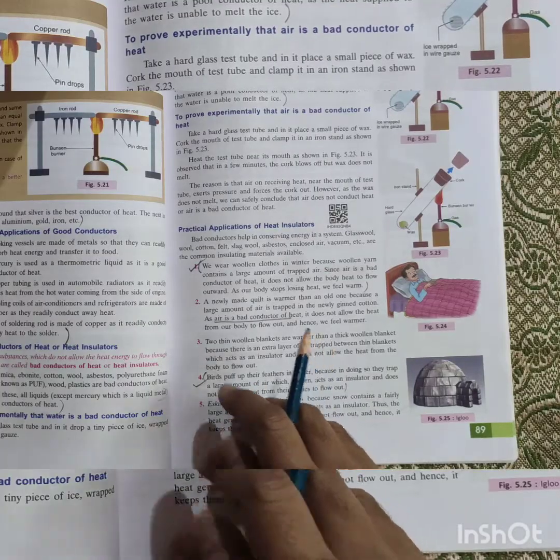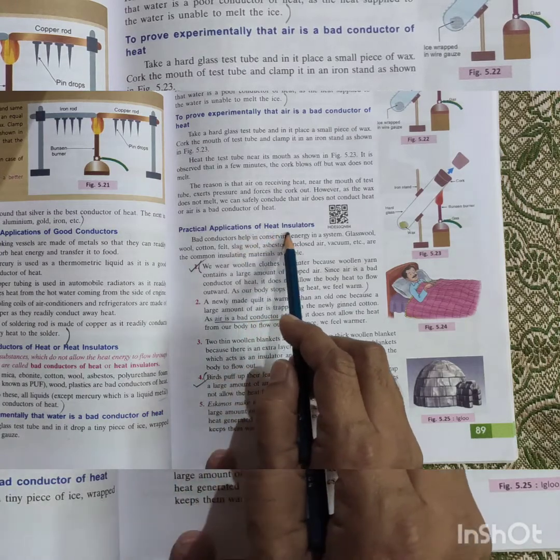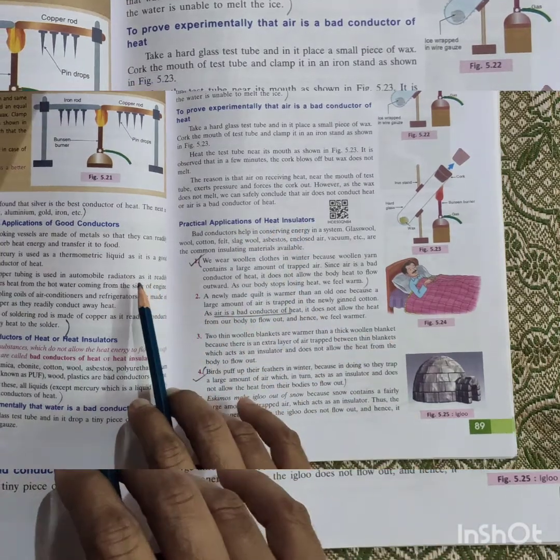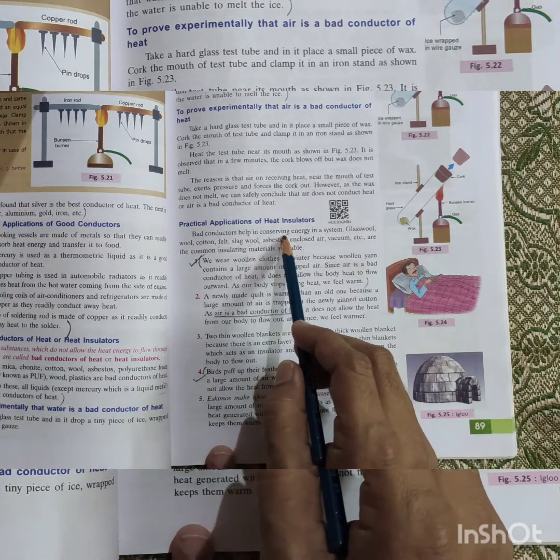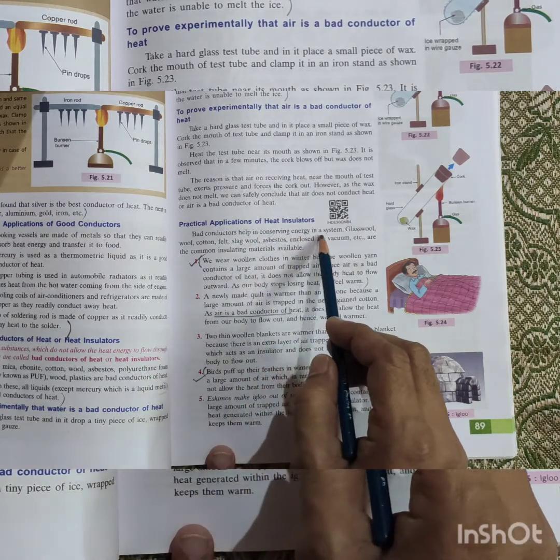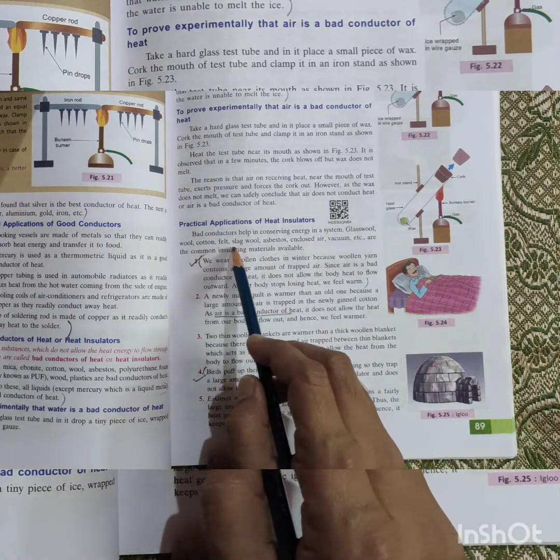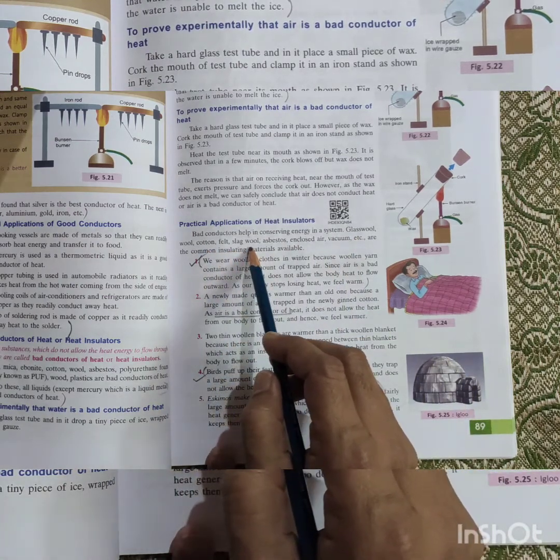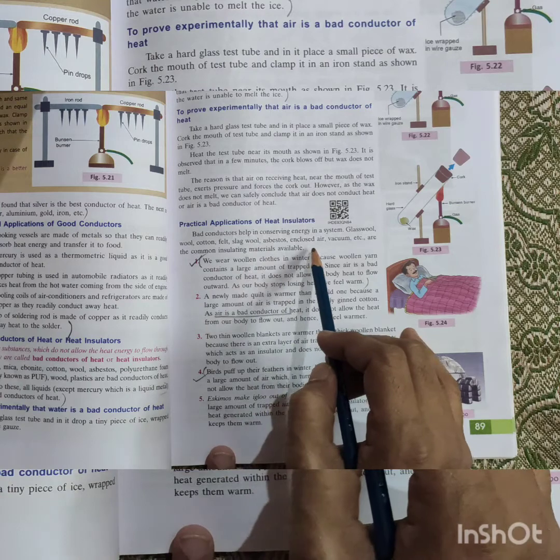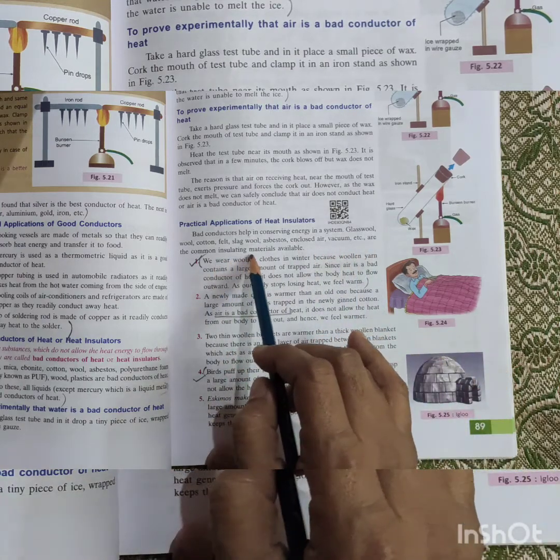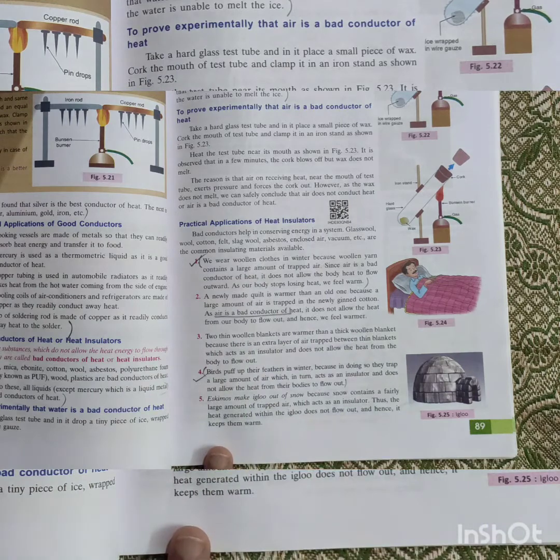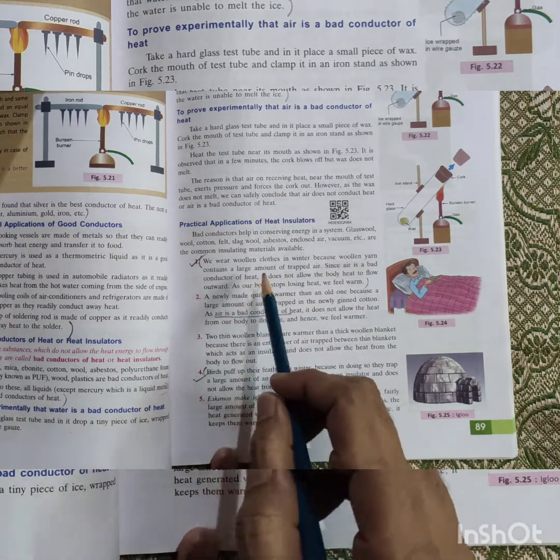Next, in our book, given some practical applications of heat insulator. Bad conductors help in conserving energy in a system. Glass wool, wool, cotton, felt, slag wool, asbestos, enclosed air, vacuum, etc. are commonly insulated materials. Some examples are given. I'll just read some of them.